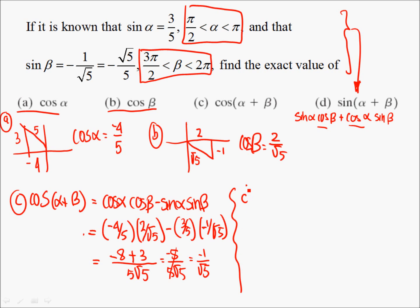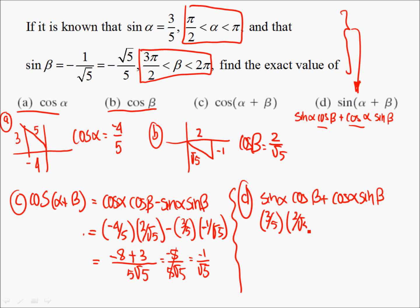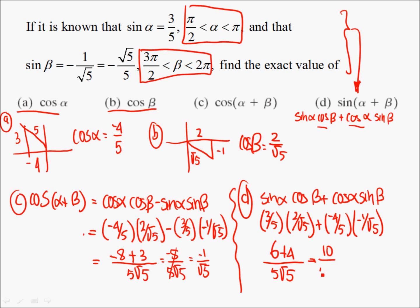In part D, we already wrote down the pattern: sine alpha cosine beta, plus cosine alpha sine beta — then just fill in the parts. The sine of alpha was 3/5. The cosine of beta is 2/√5. Plus, the cosine of alpha was negative 4/5, and the sine of beta was negative 1/√5. So 3 times 2 is 6, and the two negatives cancel each other, giving us 6 plus 4, divided by 5√5. That is 10 divided by 5√5, which reduces to 2 over the square root of 5.